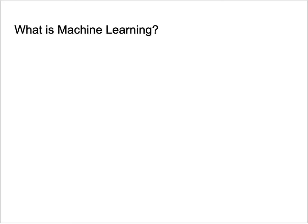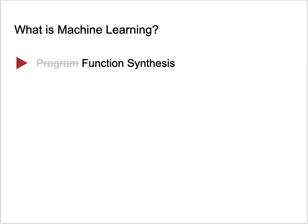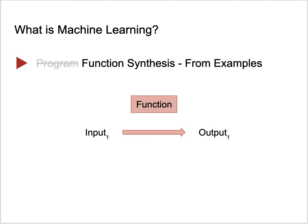What is machine learning? It's a form of program synthesis, or rather a technique to synthesize functions based on examples. We can look into examples of inputs and outputs of these functions and then try to come up with a reconstruction of the function. The input for the algorithm that learns how to synthesize that function are examples — a few inputs and the corresponding outputs.